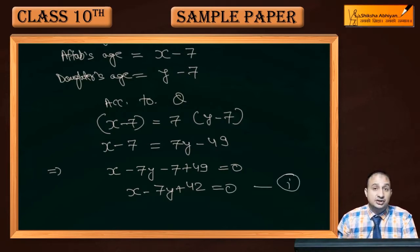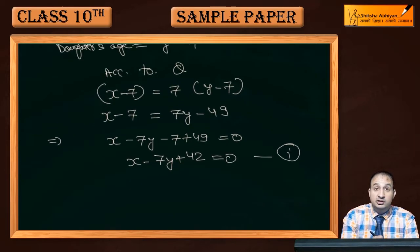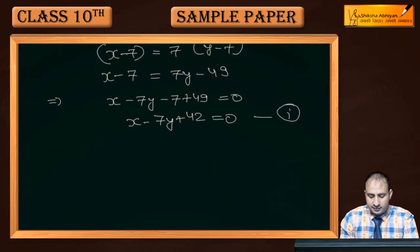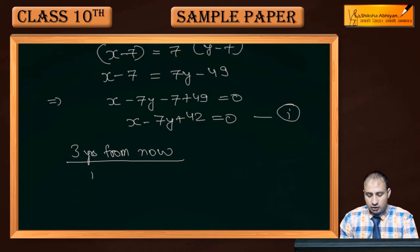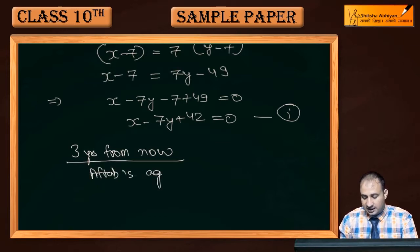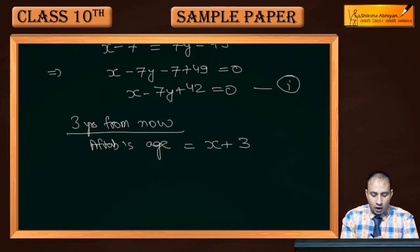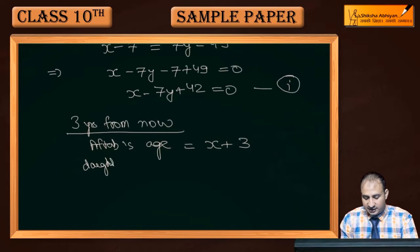अब एक और equation बनेगी — second condition दी गई है: 3 years from now, यानि आज से 3 साल बाद। दोनों की age क्या हो जाएगी? Aftaab की age आज x है, तो 3 साल बाद x plus 3 होगी। और daughter की age y plus 3 हो जाएगी।